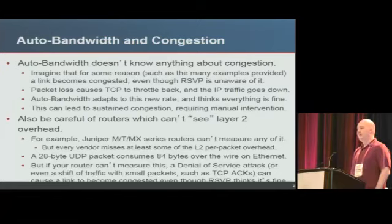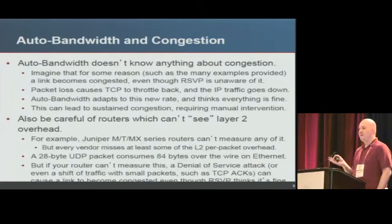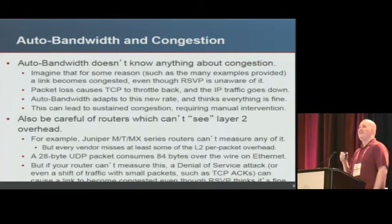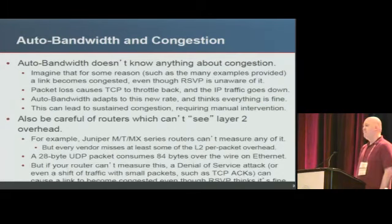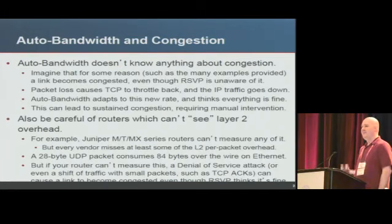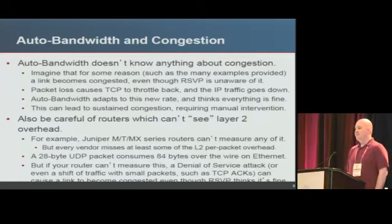Auto bandwidth doesn't know anything about congestion — it's a simple counter that counts octets across an LSP and derives a rate, but doesn't know when the link is actually congested. If there's a bug causing congestion, TCP throttles back, IP traffic goes down, and auto bandwidth adapts to that lower rate — you may be persistently dropping traffic without knowing. Also, Juniper MX and M series can't measure layer-2 overhead: a 28-byte UDP packet actually consumes 84 bytes across the wire, so you might have a DoS attack causing congestion that RSVP thinks is perfectly fine.